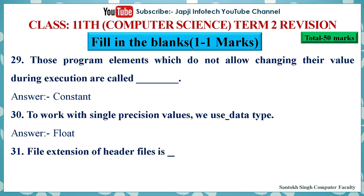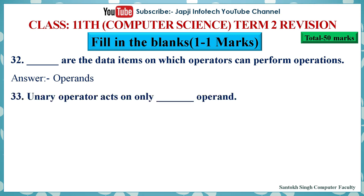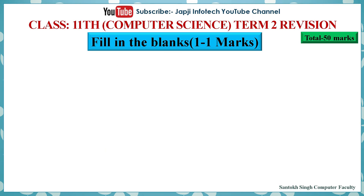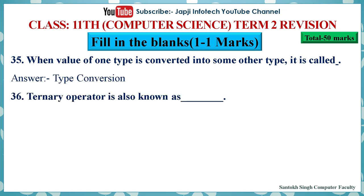29. Those program elements which do not allow changing their value during execution are called constants. 30. To work with single precision values, we use float data type. 31. The file extension of header files is .h. 32. Operands are the data items on which operators can perform operations. 33. Unary operators act on only one operand. 34. Modulus arithmetic operator performs only on integer operands. 35. When values of one type are converted into some other type, it is called type conversion. 36. Ternary operator is also known as conditional operator.